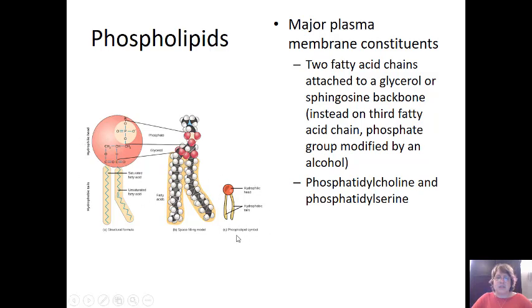There are two very common phospholipids. There's many different types, but two most common in our cell membrane is phosphatidylcholine and phosphatidylserine. So those are the two most common in our cell membranes.